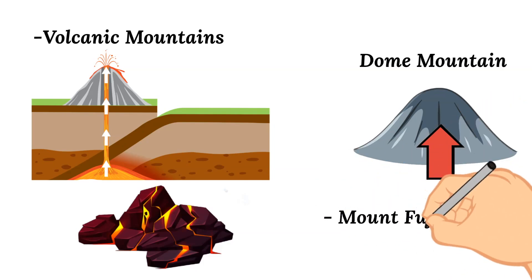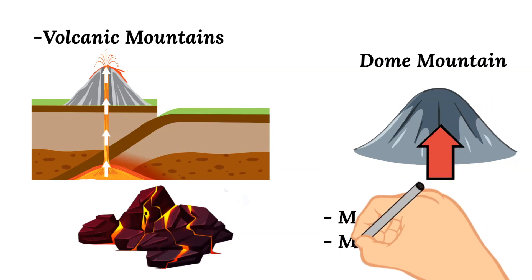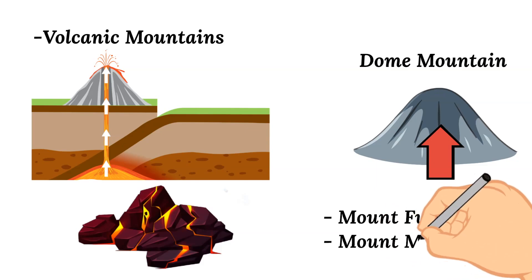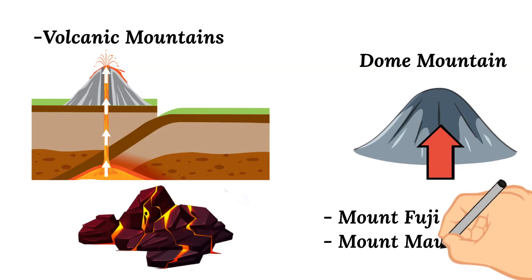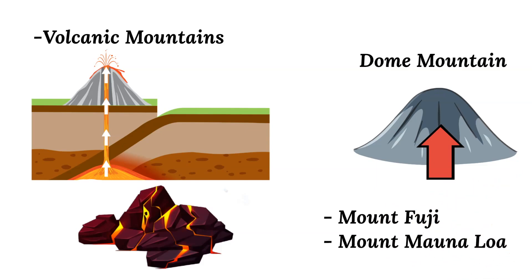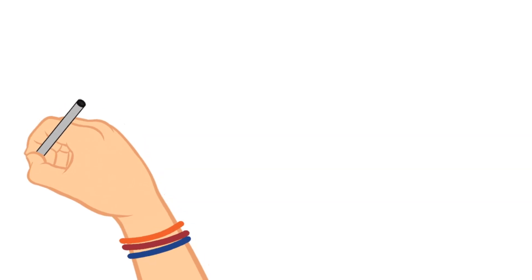Some examples of volcanic mountains include Mount Fuji in Japan and Mount Mauna Loa in Hawaii.